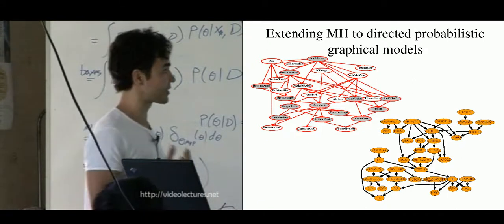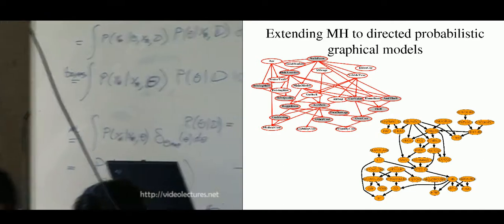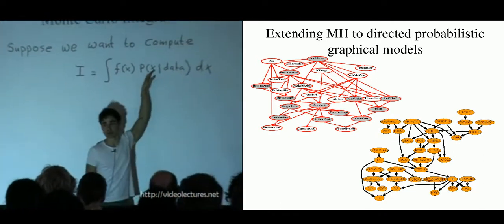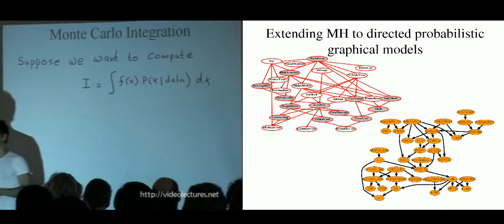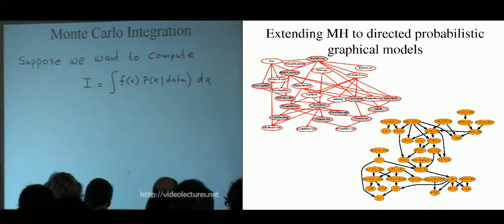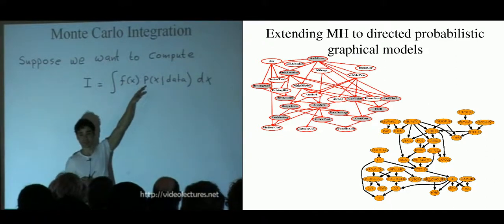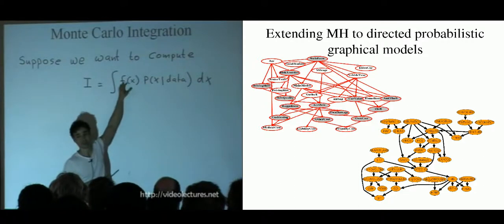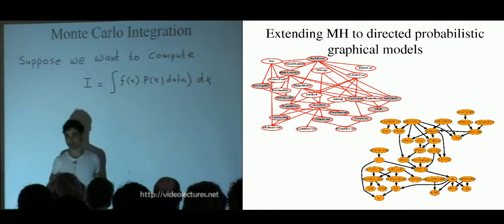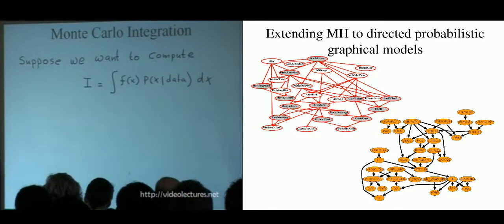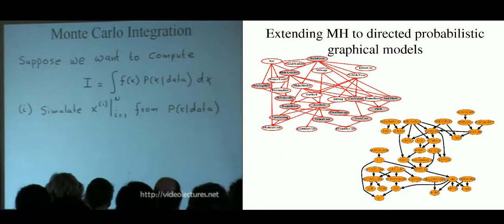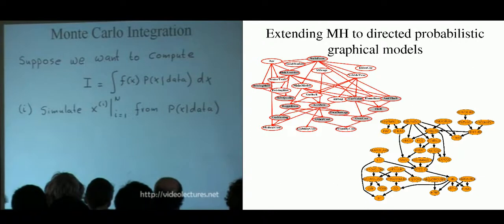Let's go to the case of expectation. We have an unknown x, some data, and we've estimated a posterior distribution of the unknown given the data. What we're interested in is computing the expectation of a function f(x). F of x could just be x — in which case we want the mean of the posterior — or x minus the mean for the variance, and so on.